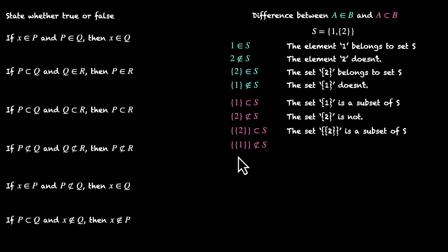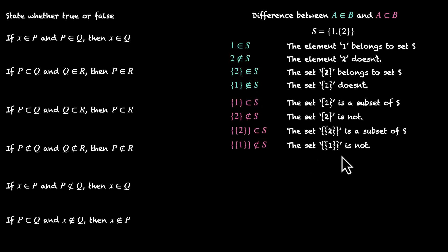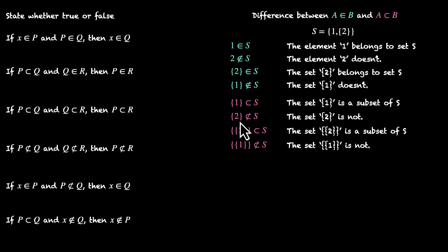What about the set that contains the set that contains 1? That is not a subset of S, because for that we need the element that is the set containing 1, and this is something we don't have in S. So to recap: 1 and the set that contains 2 are elements of S. We can make subsets using these two. We can make a subset with 1, and a subset with the set that contains 2. But 2 does not belong to S, so we can't create a subset that has 2 as an element.